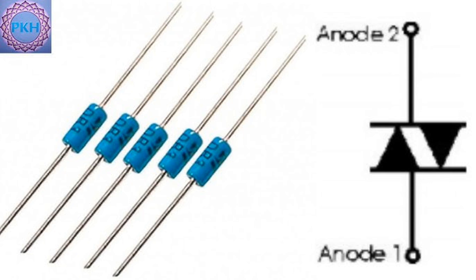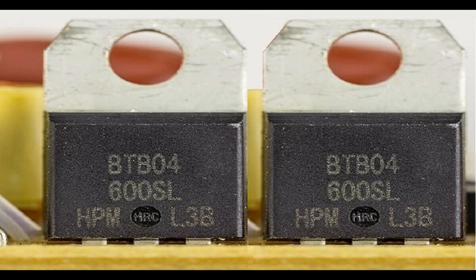Application 7 — overvoltage protection: DIACs can be used for overvoltage protection in circuits where excess voltage could damage sensitive components. When the voltage rises above the DIAC's breakdown threshold, it switches to a conductive state, helping to absorb excess energy or triggering protective devices like a TRIAC to shunt the excess current. Example: surge protection in electronic circuits or equipment.